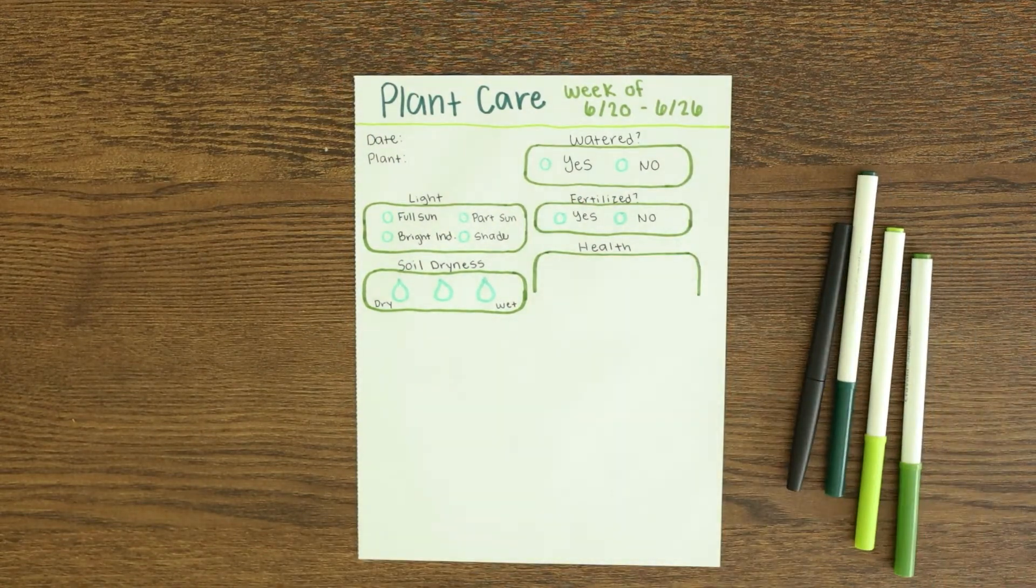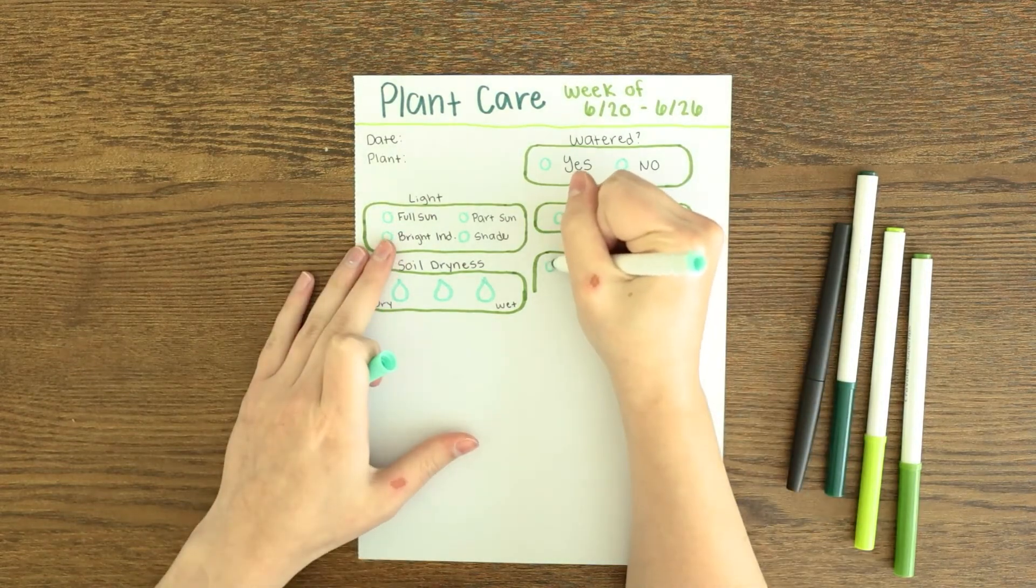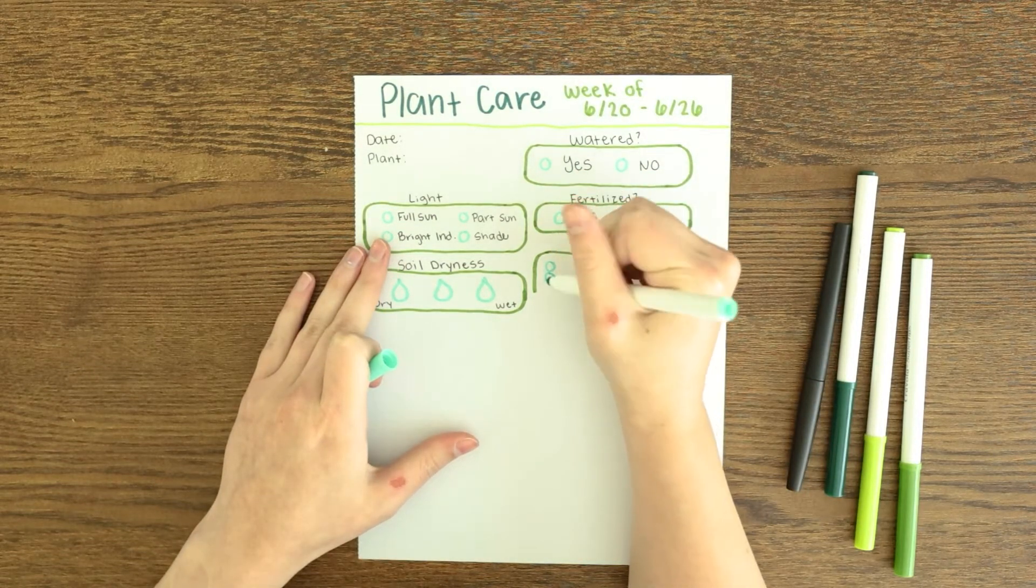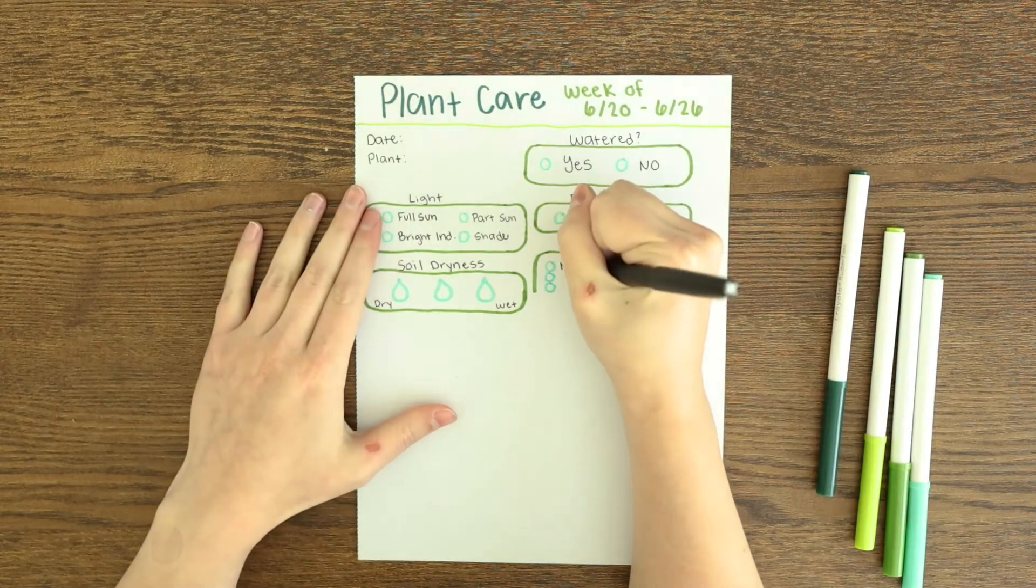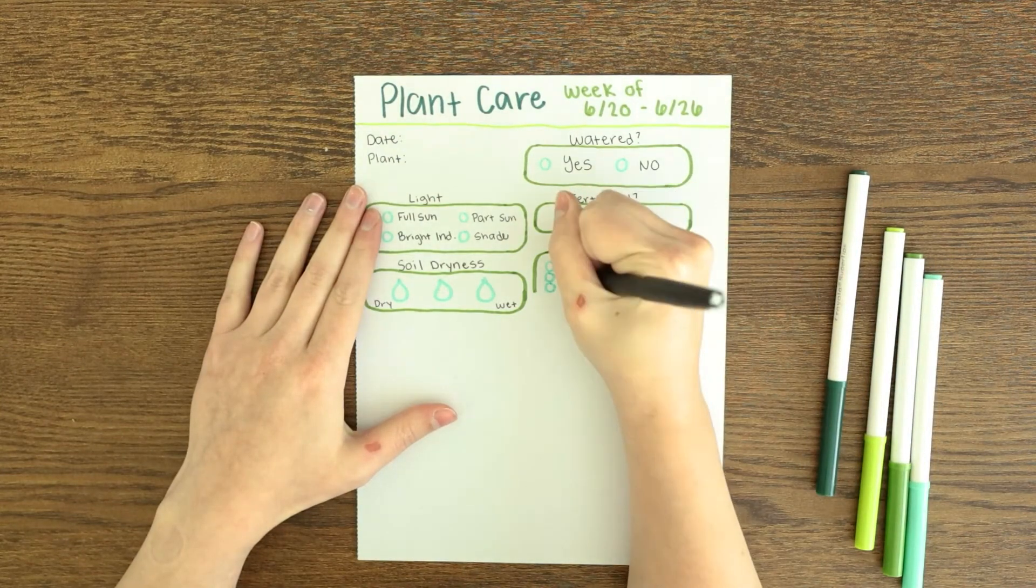Then I have 'fertilized' - did I fertilize it yes or no. And then if I didn't water it, what was the soil dryness like? Was it still really wet because I watered it yesterday? Was it getting drier but doesn't need water yet? Or was it really dry and yes I watered it today?